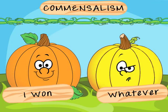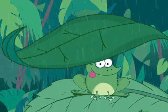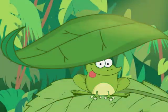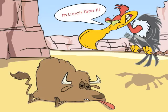Commensalism is a symbiotic relationship between two organisms where one organism benefits and the other is not affected. An example of this is frogs in a rainforest — the frogs benefit by using the leaves of trees as shelter from the sun and rain, while the plants are unaffected by the presence of frogs. Vultures feeding on the dead body of animals is another example of commensalism, as the dead animal is unaffected by what happens to it.